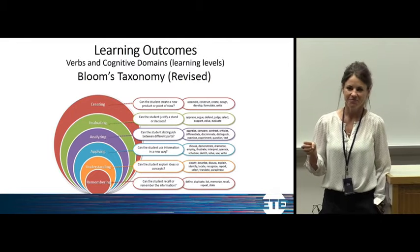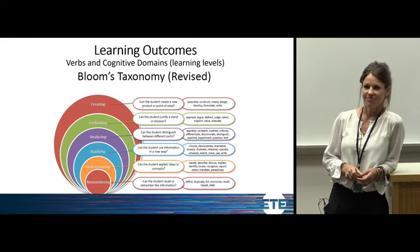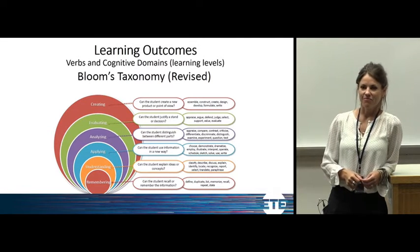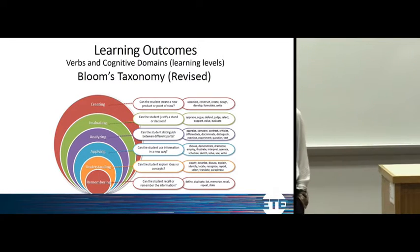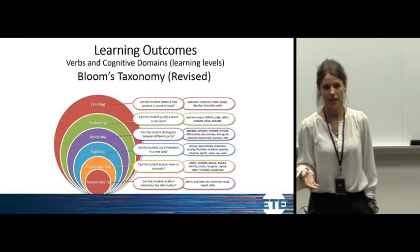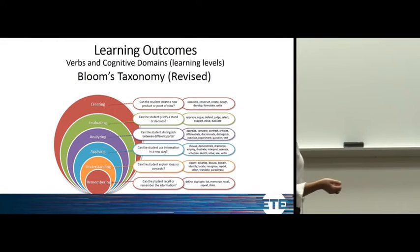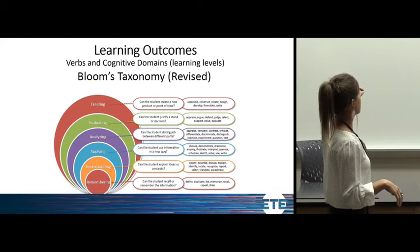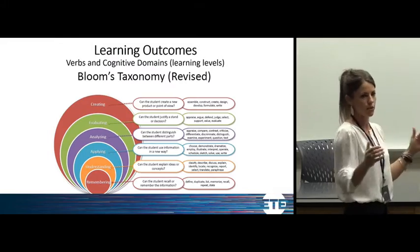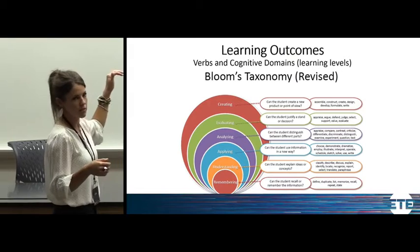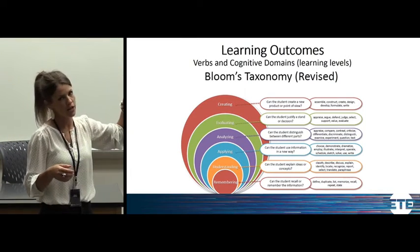Bloom's Taxonomy is a hierarchy of levels of knowledge or understanding. At the bottom, it's just being able to recall facts, and as you move up, you're able to use those facts and knowledge to create something. What I like about this particular illustration is that each level is encircled by the next, telling you that you need to know something at the remember level before you can do something at the creation level.